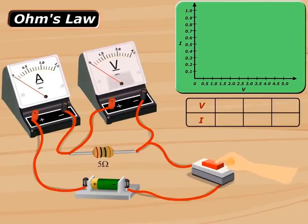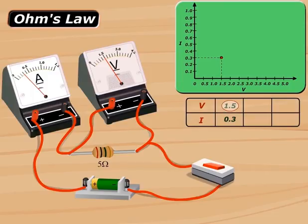Here you can see that for a potential difference of 1.5 volts, the current flowing through the 5 ohms resistor is 0.3 amperes.